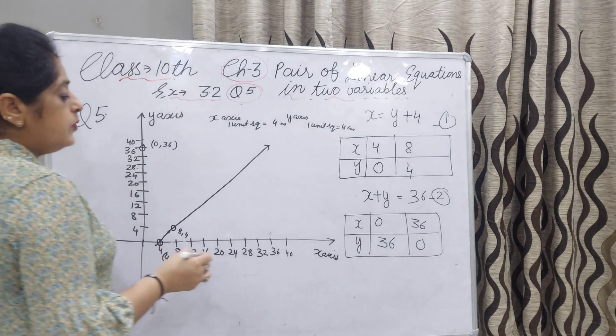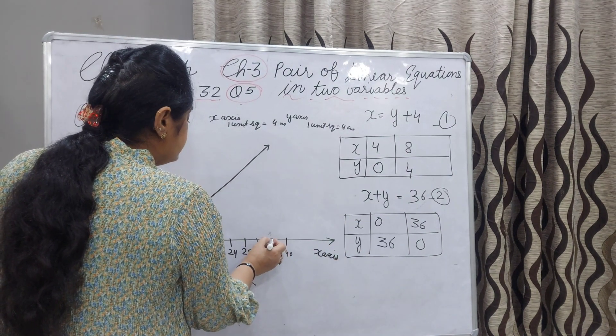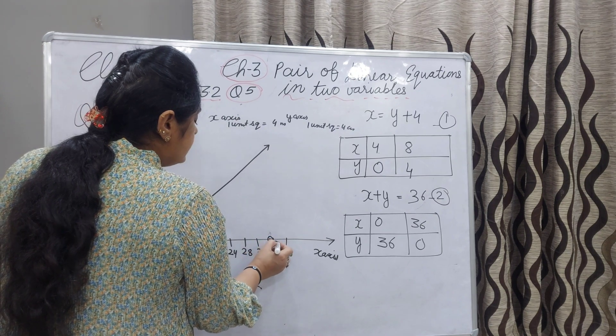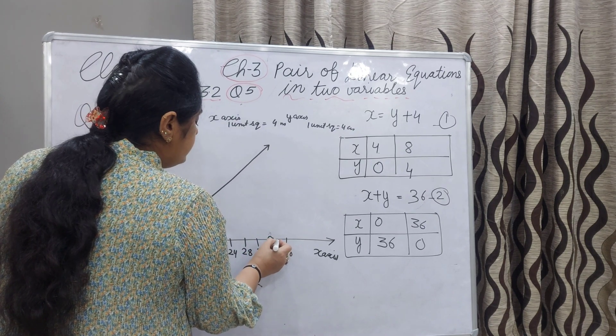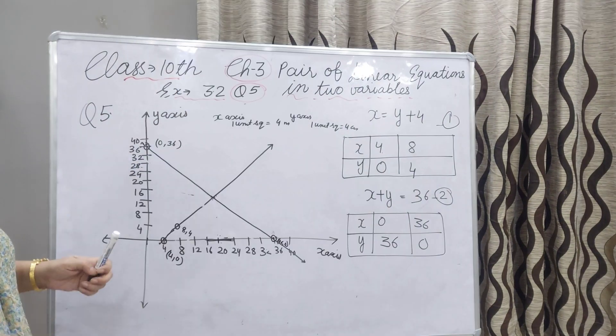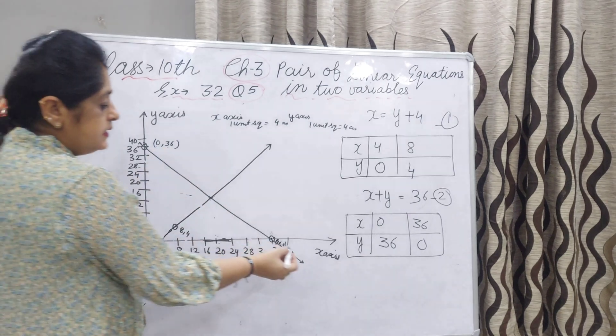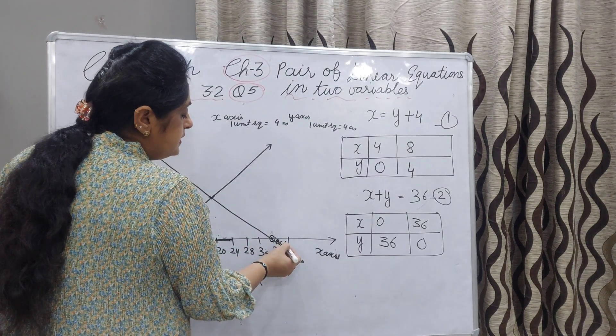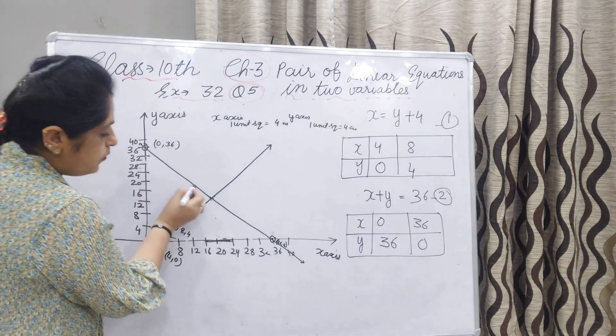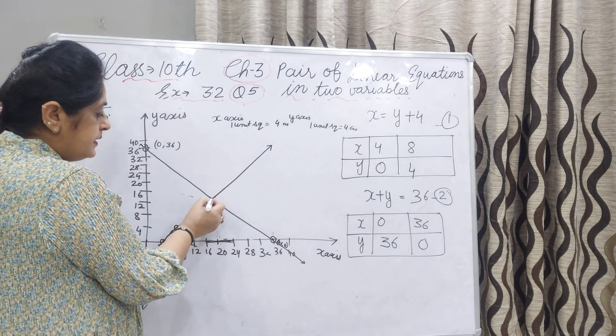And second point is x 36, y 0. This point we have taken. Now we will join the line with these 2 points: 0, 36 and x 36, y 0. Join these 2 points with a scale. These 2 lines are meeting at this point.